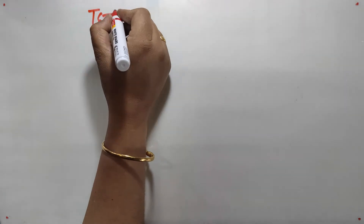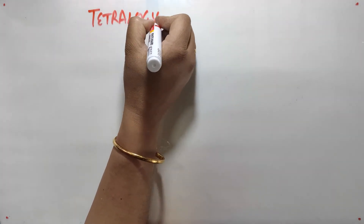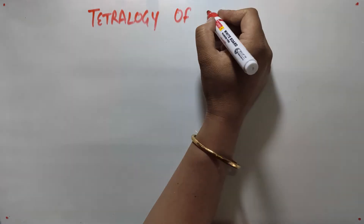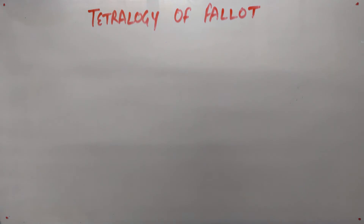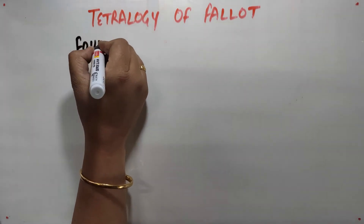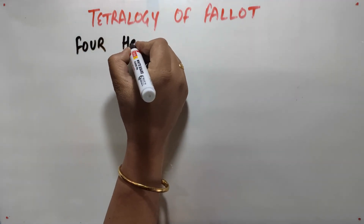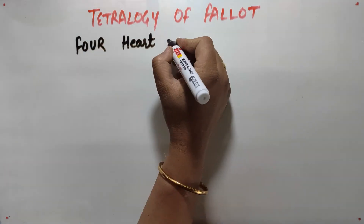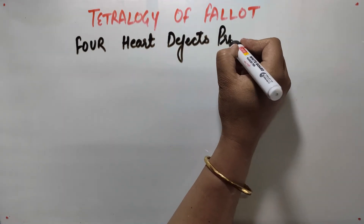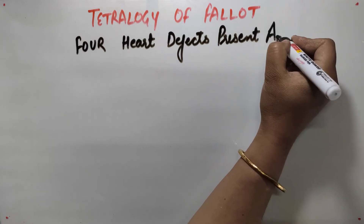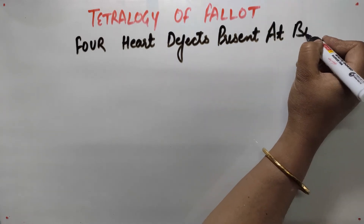Tetralogy of Fallot is a combination of four heart defects which is present at birth, and the mnemonic for it is the definition itself — that is, four heart defects present at birth.